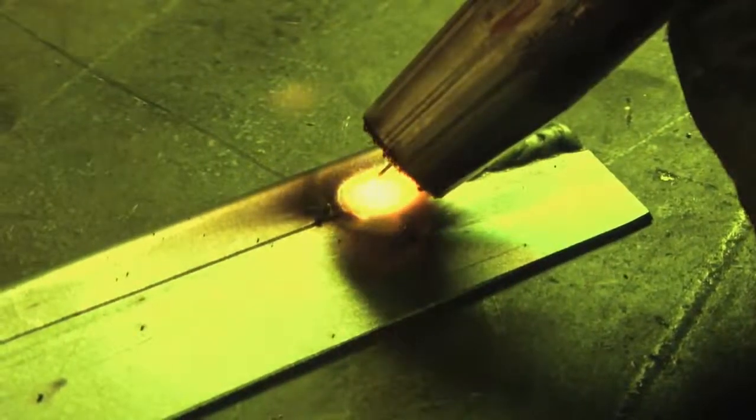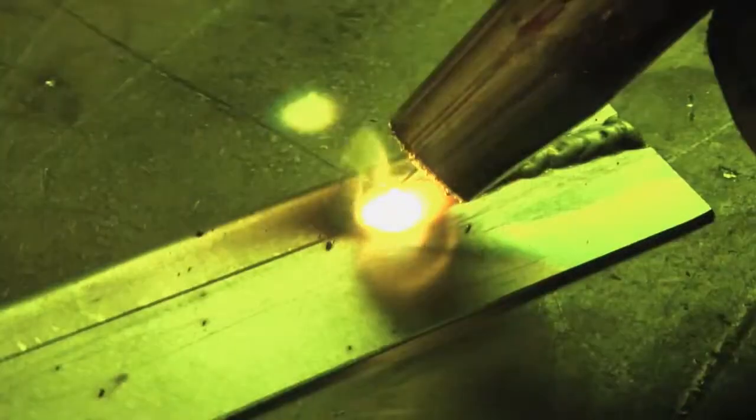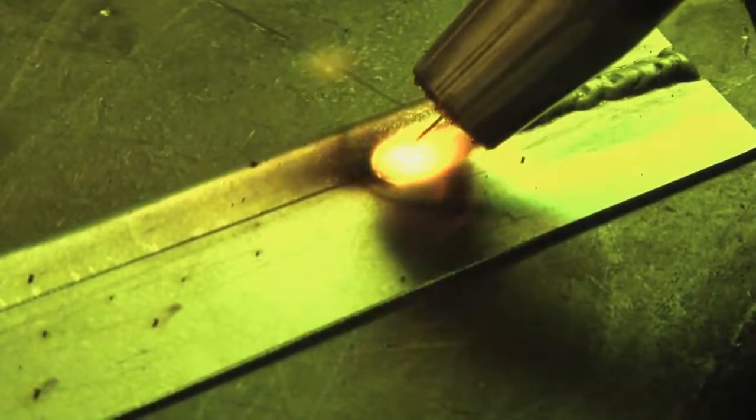Normally what you do to get a good butt weld on the car, with any of these welds actually, is it will be three to four beads, and then I'll cool down with compressed air. So watch, it would be one, two, three.